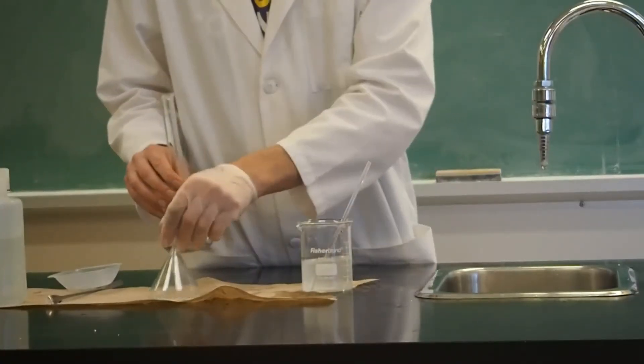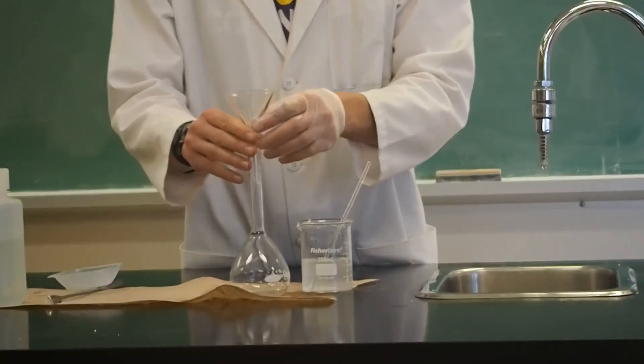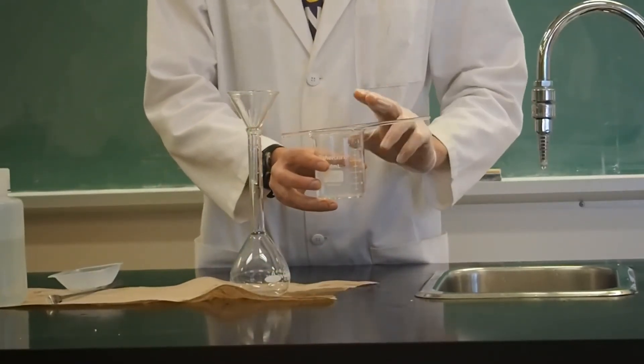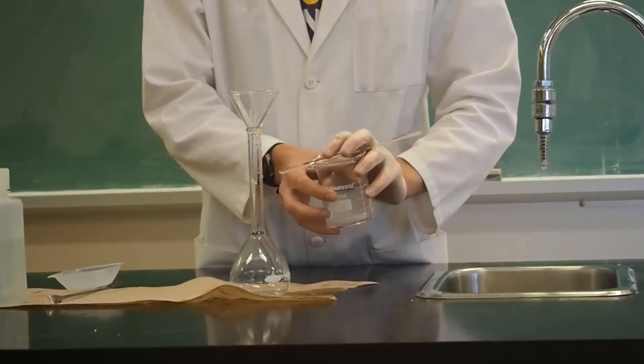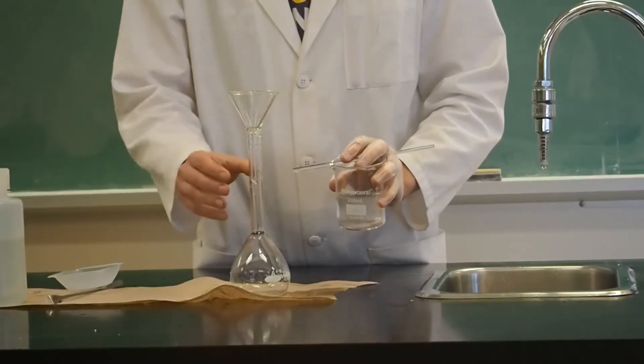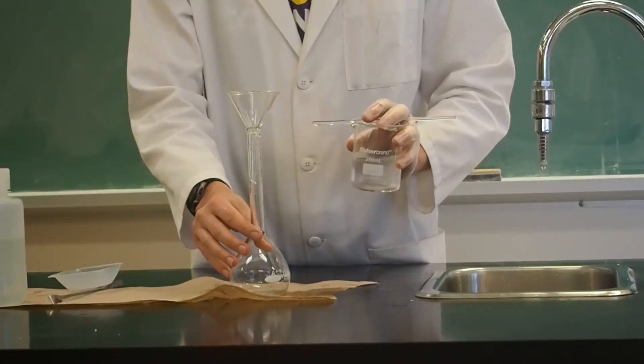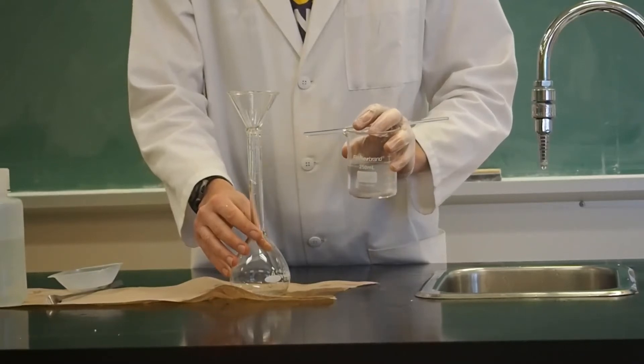Once you have dissolved the maximum amount of solute in that volume of water, you are going to decant the solution into the volumetric flask. When decanting, we want to transfer this dissolved solute in solution, but leave any undissolved solute in the beaker.